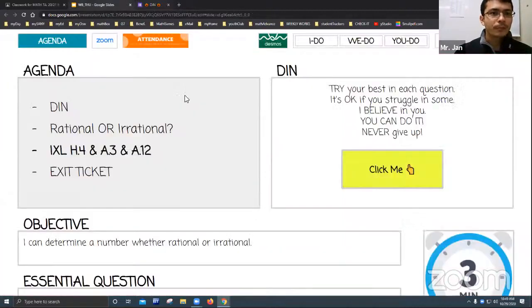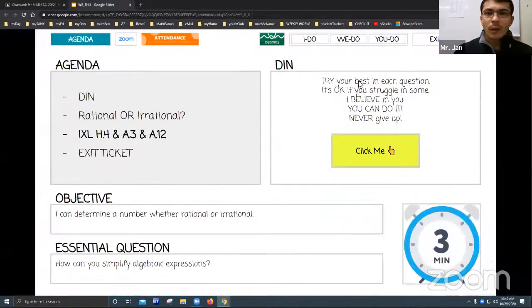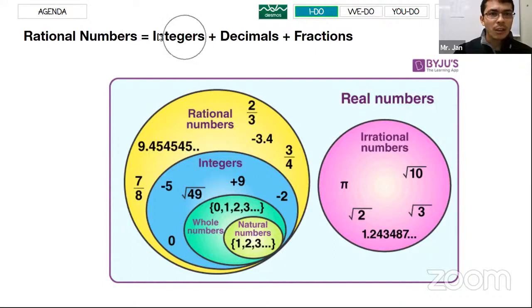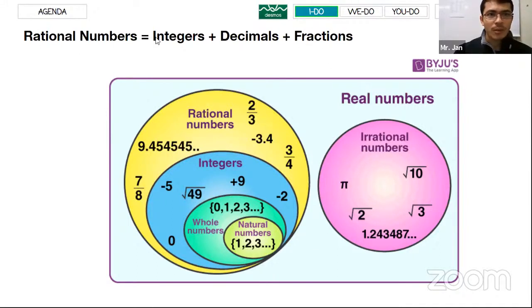We're going to move on. The first slide is about rational numbers. Rational numbers are numbers that are integers, decimals, and fractions — all three types together are called rational numbers. This chart tells everything you need to know about rational numbers.